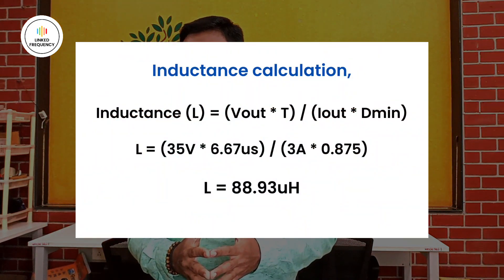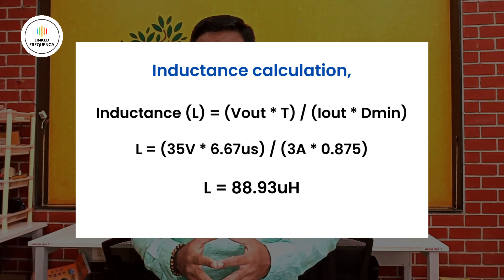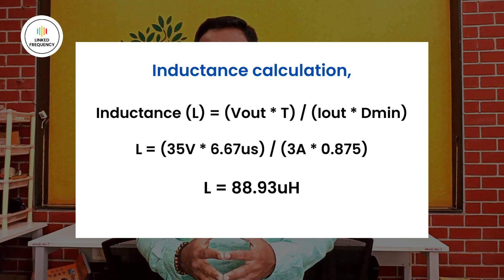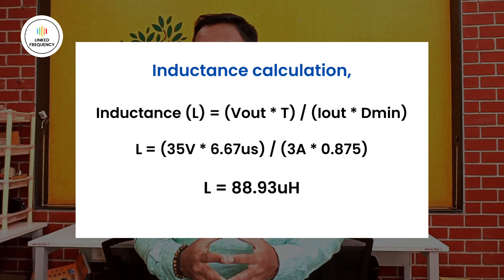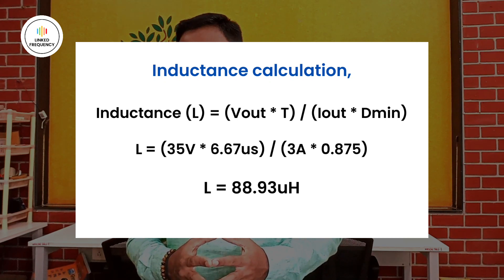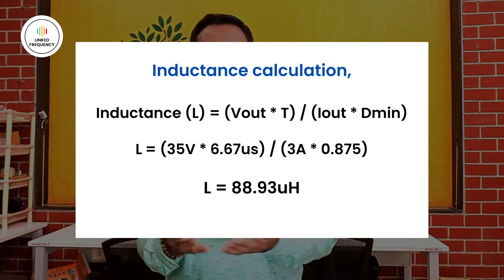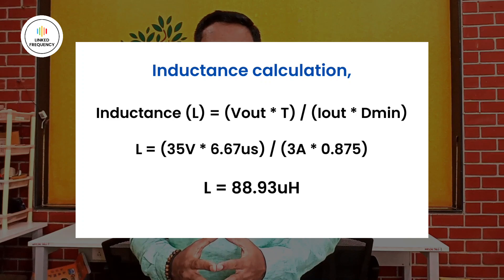Now it is time to calculate the inductance value using the formula: L = V_out × T / (I_out × D_min). With V_out = 35 V, T = 6.67 microseconds, I_out maximum = 3 A, and duty ratio D_min = 0.875, performing the basic calculation gives us an inductance value of approximately 88.93 microhenrys.